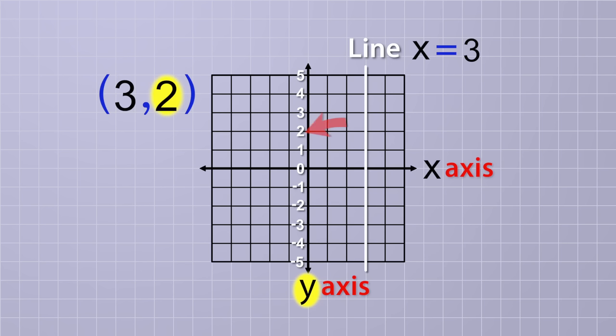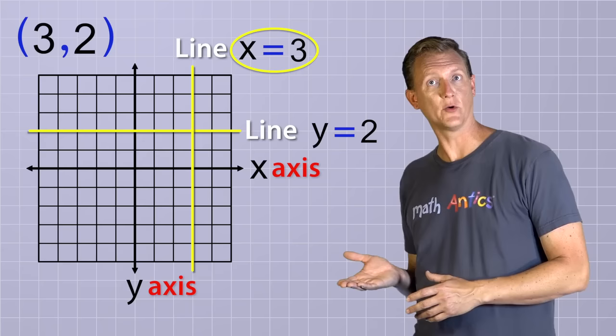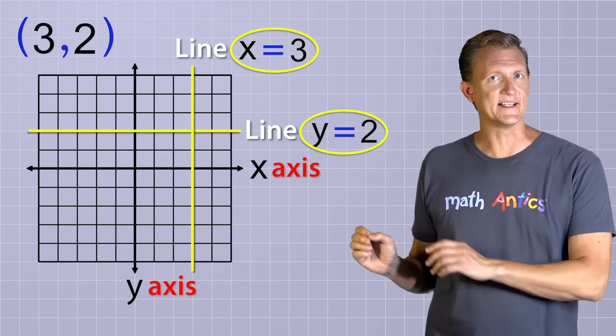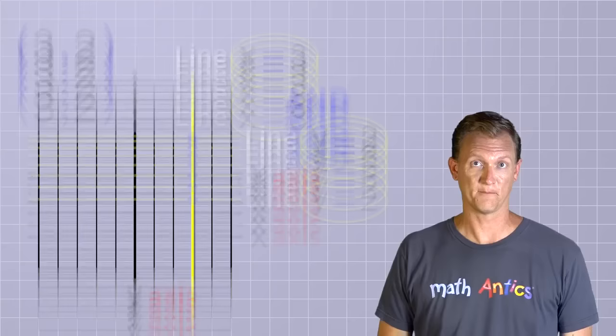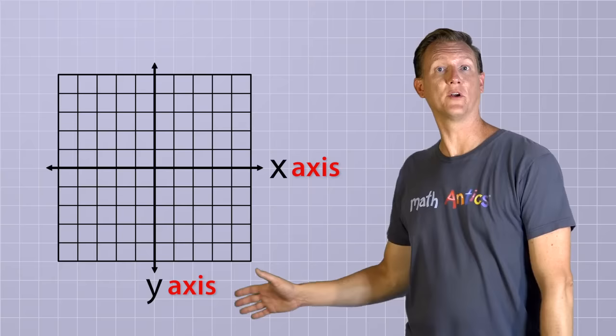Next, we locate the y-value along the y-axis, which is at 2 in this case. But again, instead of putting a point there, we draw, or just imagine, a line perpendicular to the y-axis that goes through the 2. We do that because the second number in the ordered pair only tells us where along the y-axis the point is, but it could be anywhere along the x-axis. So we just draw a line there to represent every possible point that could have a y-value of 2. Ah, but look what we've got now. The first line represents all the possible locations where x equals 3. And the second line represents all the possible locations where y equals 2. And the exact point where the two lines intersect represents the only point in the entire coordinate plane where both x equals 3 and y equals 2. That intersection is the location of our point.